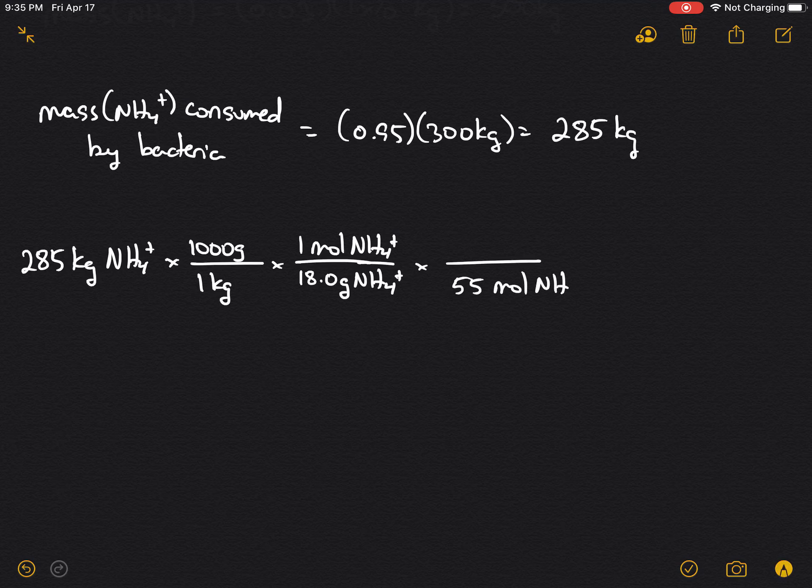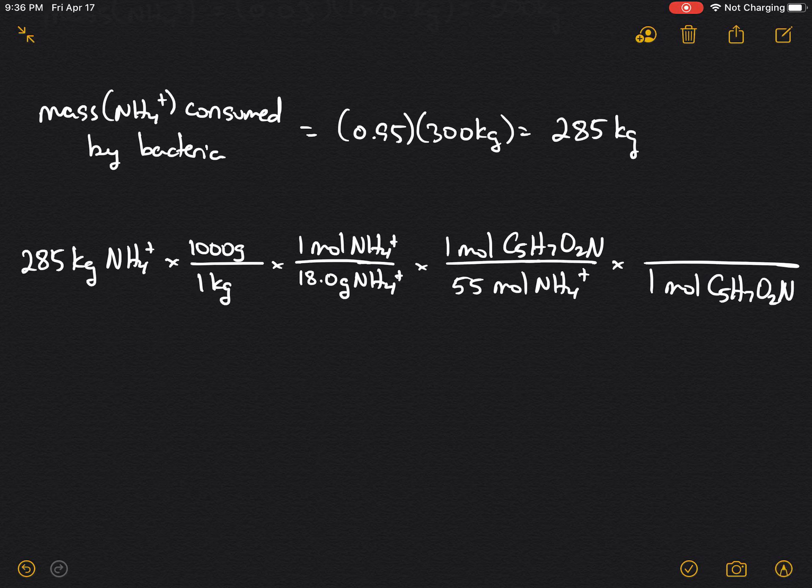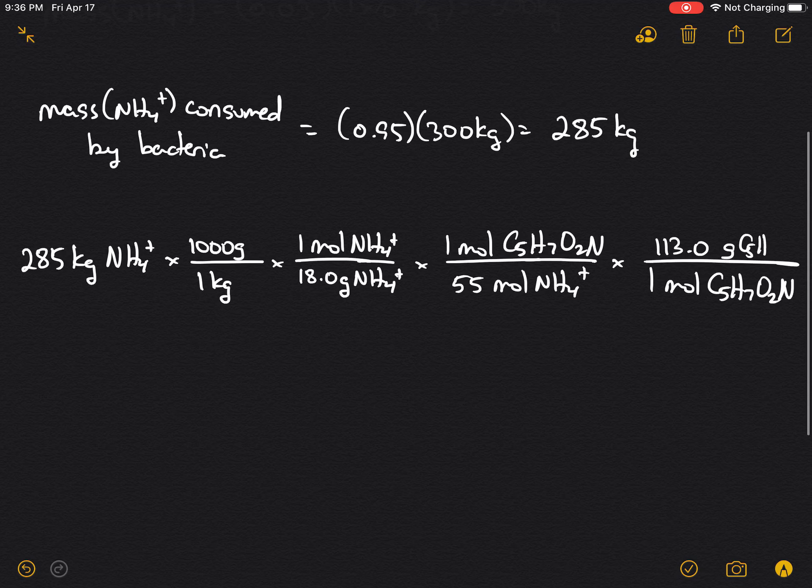The stoichiometry here is 55 moles of NH4+ to one mole of bacterial tissue C5H7O2N. We multiply by the molar mass of the bacterial tissue, C5H7O2N, which is 113.0 grams per mole.